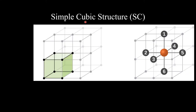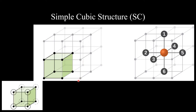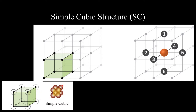Now let's look at the basic introduction of cubic structures. This diagram is a simple cubic structure. This is a unit cell, and this unit cell is repeated in the entire structure. This unit cell is drawn side by side, each attached to the other. So this is basically a simple cubic structure.